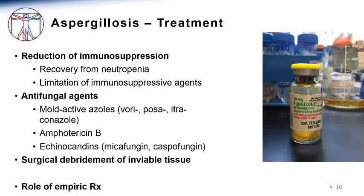Whenever possible, one must consider if immunosuppression can be reversed or modified. Most neutropenic patients will only really recover from invasive Aspergillosis when their neutrophils return during recovery from cancer chemotherapy or stem cell transplantation. A limited number of antifungal agents have activity against Aspergillus fumigatus. These agents include the mold-active azoles such as voriconazole, posaconazole, and itraconazole, which inhibit cell membrane ergosterol synthesis and are potent treatment options. Polyenes such as Amphotericin B have broad antifungal activity and are among the best therapies available against Aspergillus infections. Amphotericin B binds to and destabilizes ergosterol in fungal cell membranes, and can be life-saving in invasive fungal diseases. However, it is only available in intravenous form and can cause many toxic side effects, including renal insufficiency.